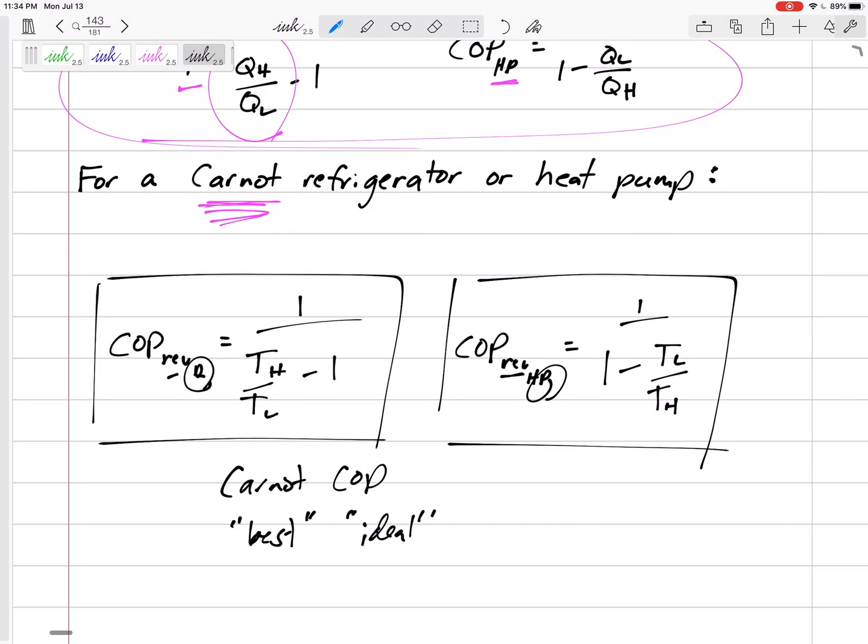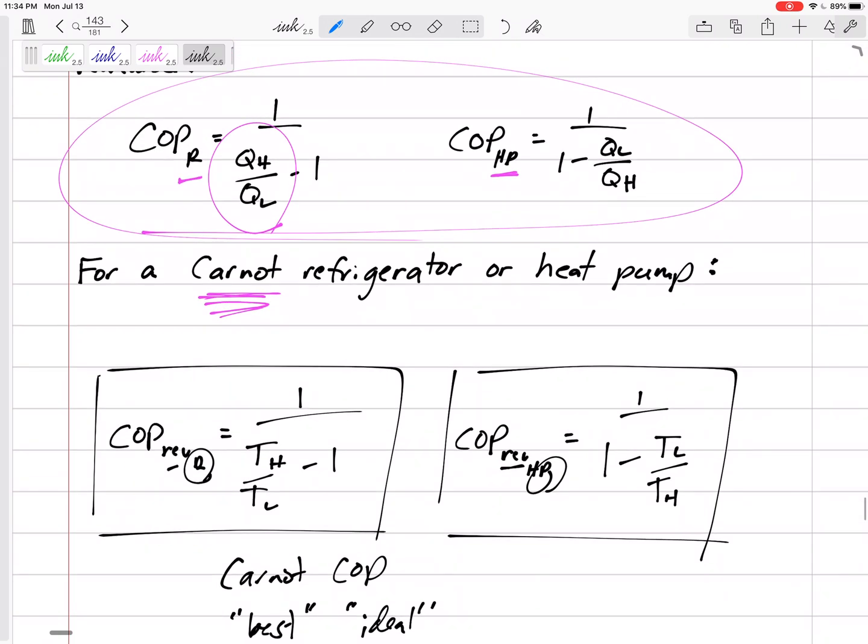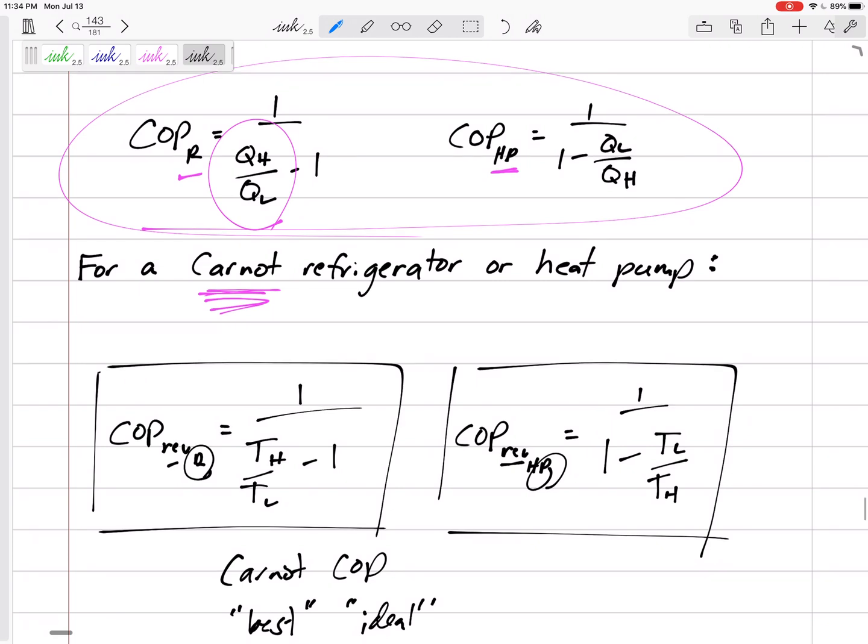That's this Carnot refrigerator and Carnot heat pump. So a new equation right here: we replace the QHs and QLs with THs and TLs because of the fact that for reversible processes, those ratios are equal.